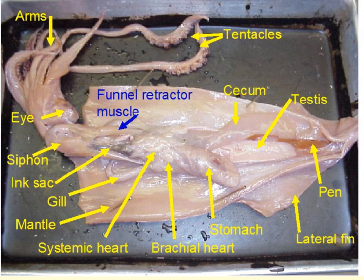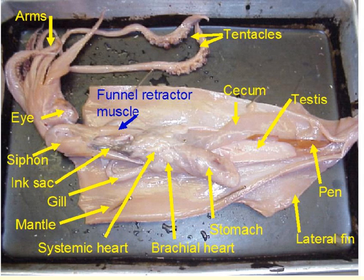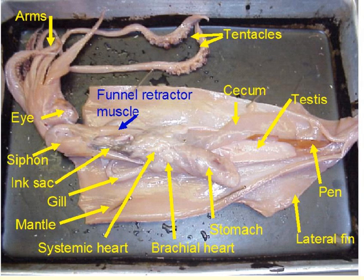Another view of the internal structures clearly shows the pen running down the length of the squid. The systemic heart is the true heart that pumps blood throughout the body — remember that the squid has a closed circulatory system with a heart and blood vessels. The branchial hearts, located on either side near the gills, can be called gill hearts; their purpose is to help pump oxygenated blood obtained from the gills back to the systemic heart and throughout the rest of the body.